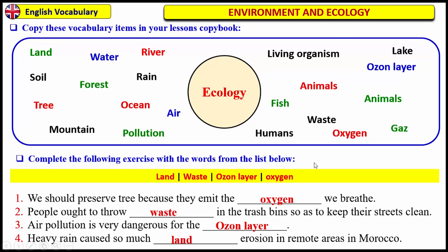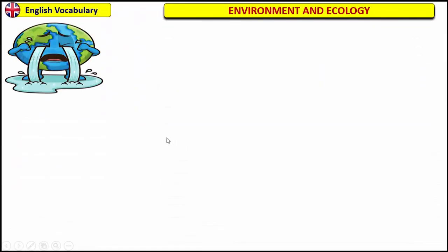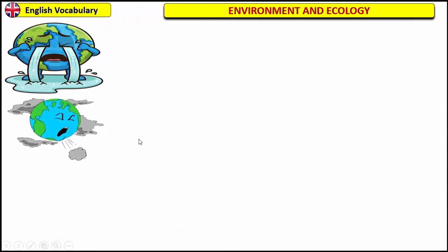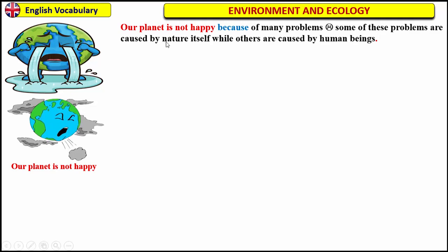Look at this picture. Is our Earth happy or sad? From the picture, our planet is not very happy. Why is the Earth so sad? The Earth is sad because of many problems. Some of these problems are caused by nature itself while others are caused by human beings. There are two types of problems: some caused by nature itself and some caused by human beings.